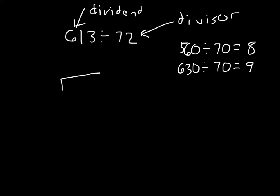So it looks like we should be choosing 8. Let's try. 613 divided by 72. 72 cannot go into 6, cannot go into 61, but it can go into 613.